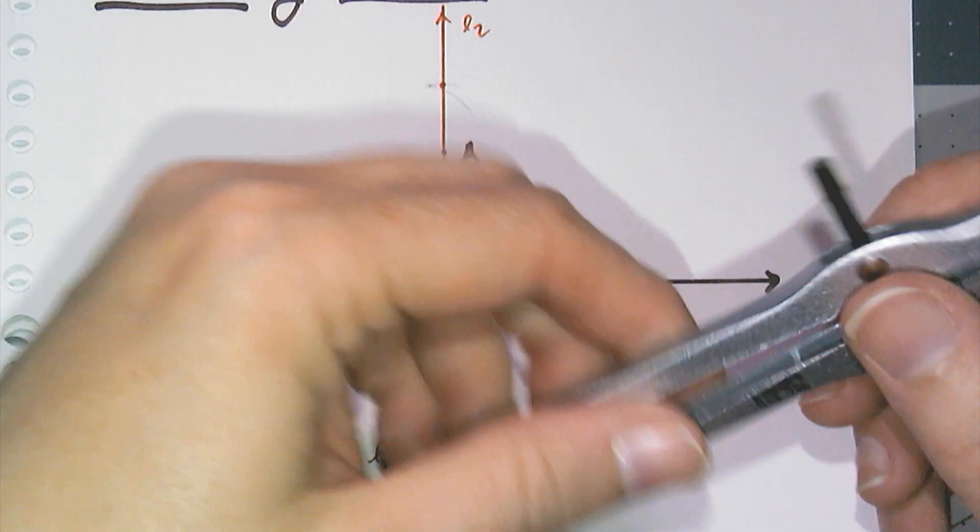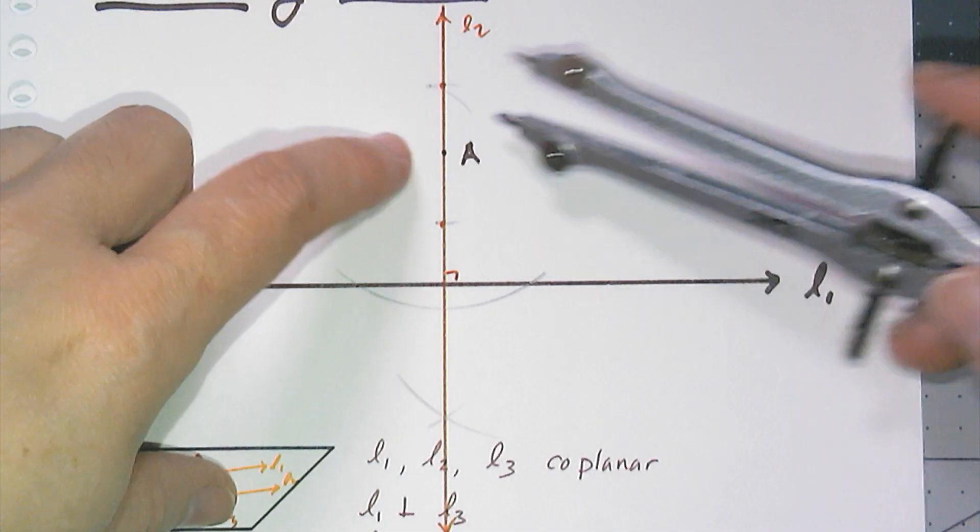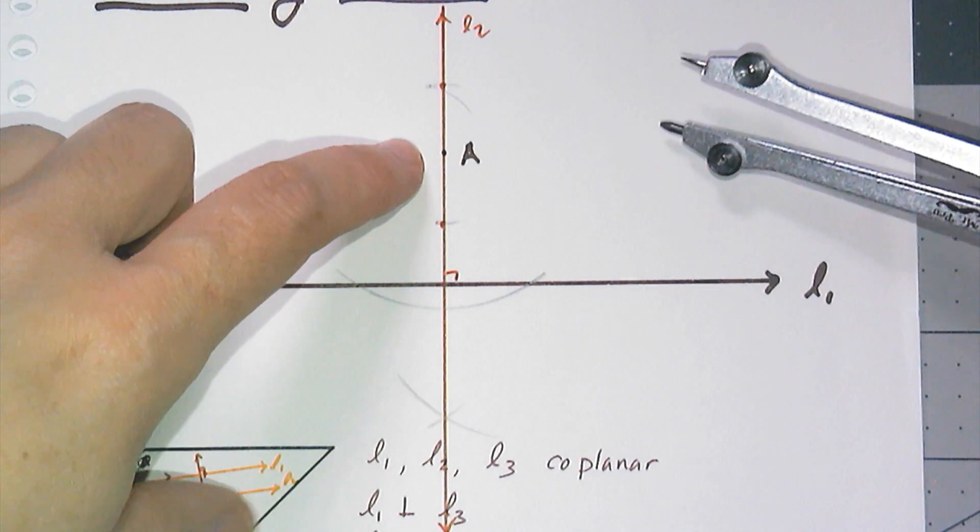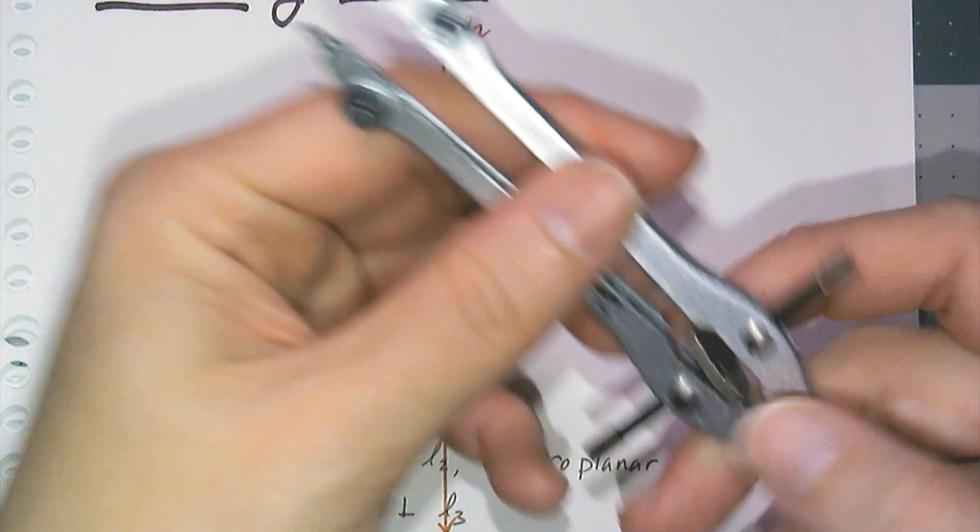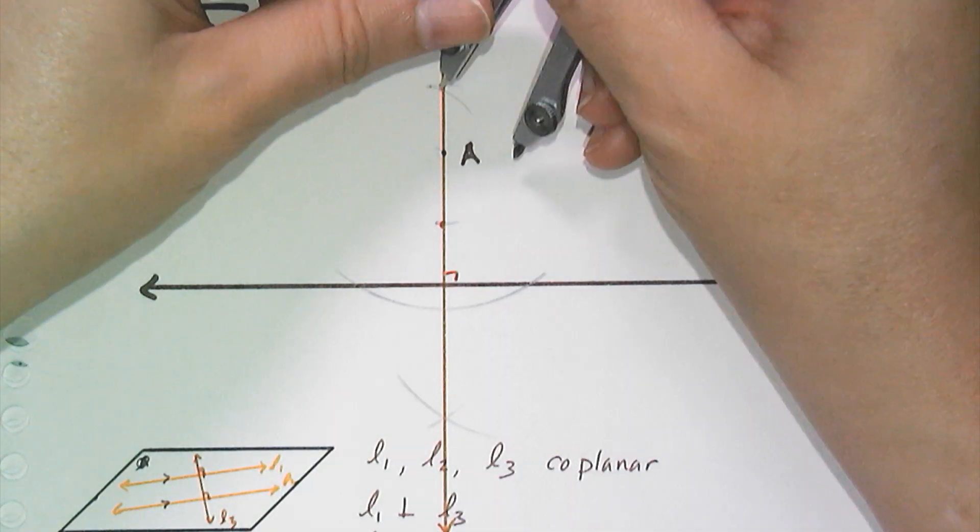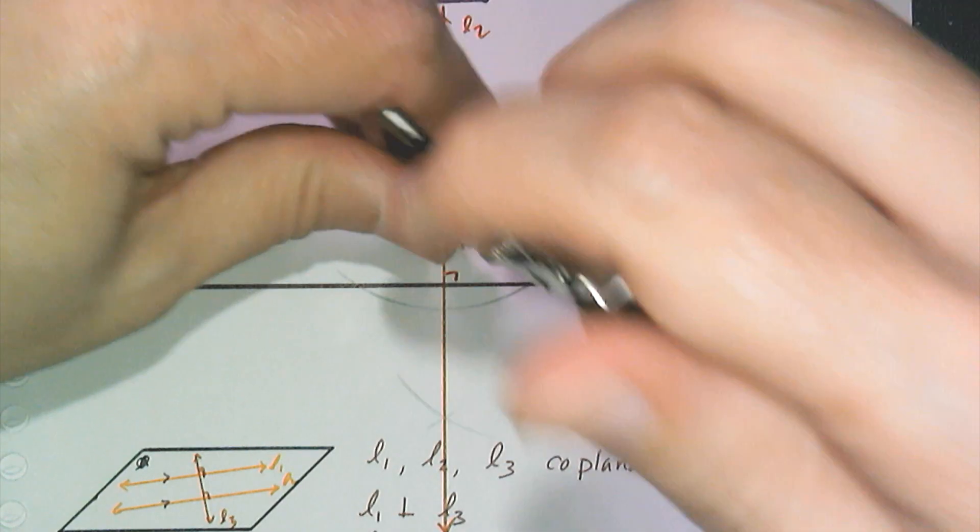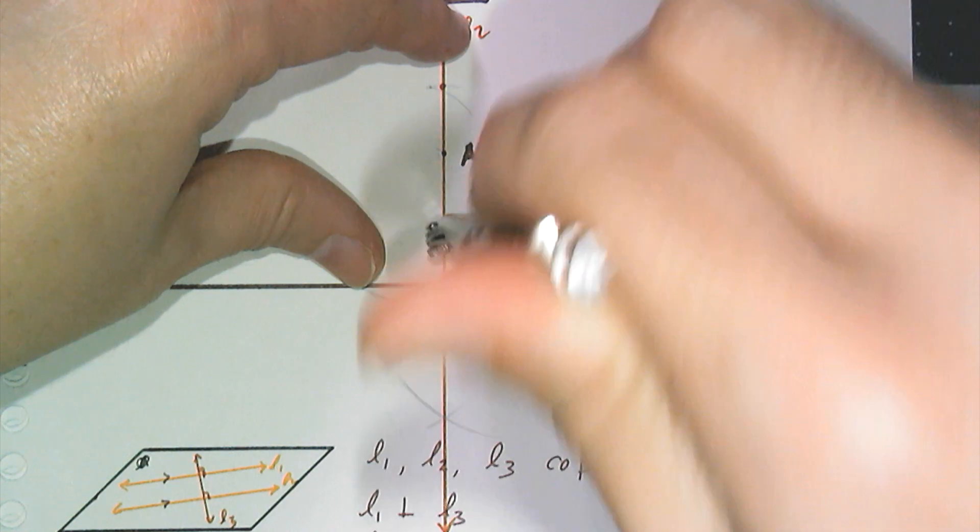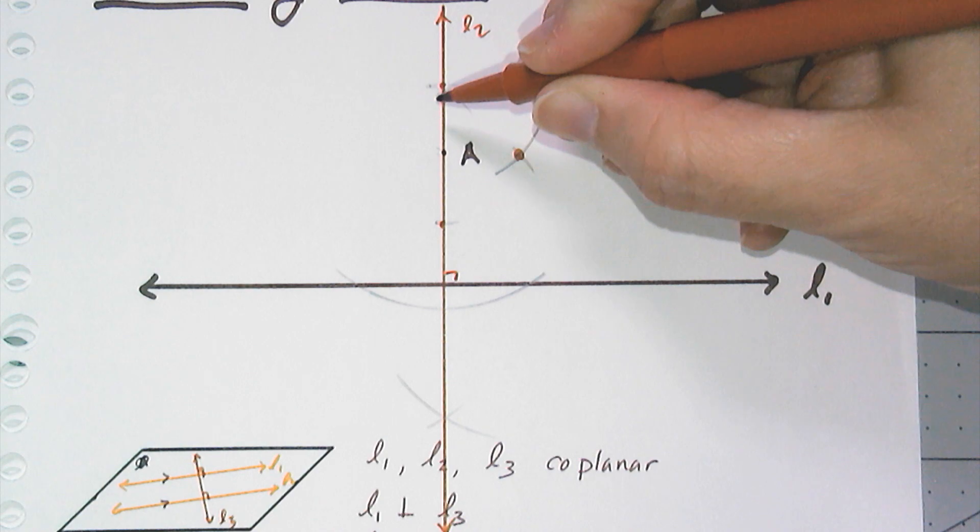And then I'm going to use the fact that if I can, the perpendicular bisector, if there's another point on the perpendicular bisector, it's going to be equidistant from the two endpoints of the line segment. So I'm going to increase the radius and then I'm going to strike an arc from that endpoint and then strike another arc from the other endpoint.